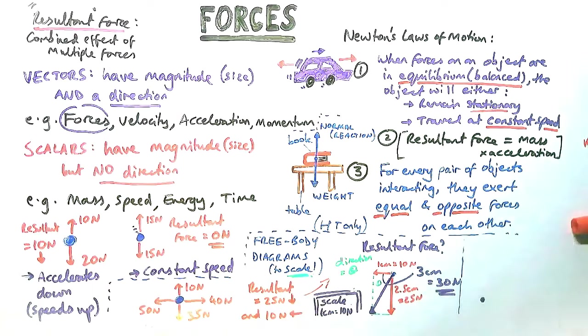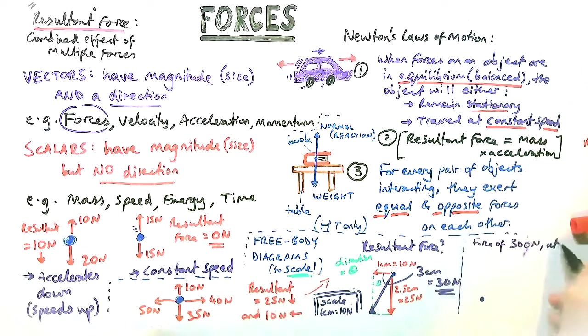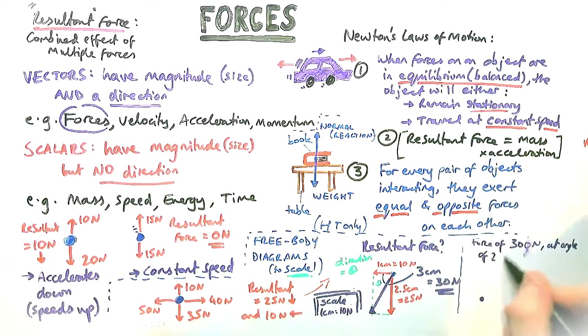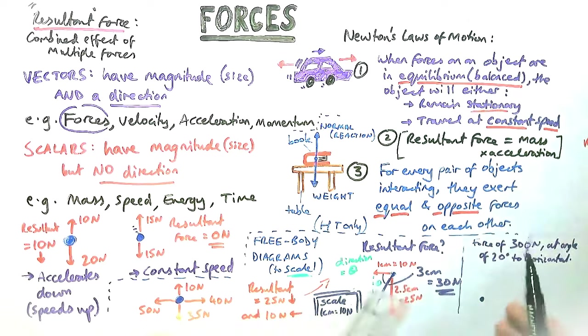Now you can also be asked to do the opposite of this. What I mean by that is, instead of starting up with two forces, you could be asked to find out the component forces. So a force of 300 newtons at an angle of 20 degrees, this is an example question, to the horizontal.